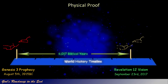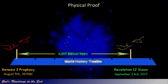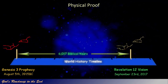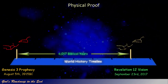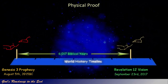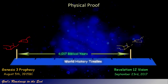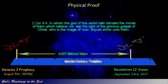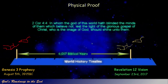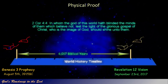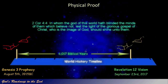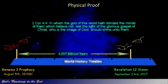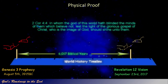Before this point there was no death, according to God's word. At this point Satan also gained control over the world and became the god of this world, as described in 2 Corinthians 4 verse 4: 'In whom the god of this world hath blinded the minds of them which believe not, lest the light of the glorious gospel of Christ, who is the image of God, should shine unto them.'